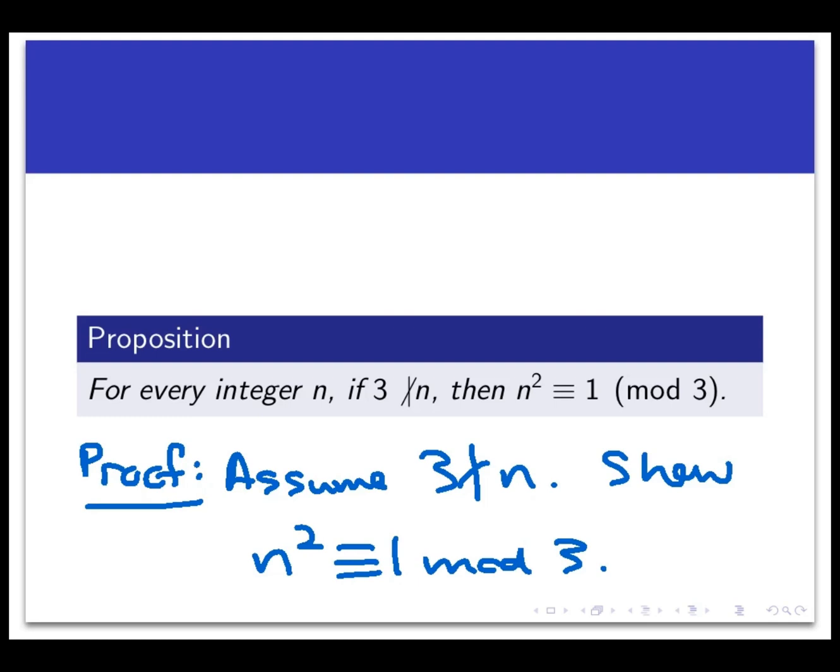Well, often in the past, we'd balk at this kind of negative statement, 3 doesn't divide n, and maybe back up and try our proof by contradiction or contraposition instead. If we tried either of those two routes instead of direct proof this time, we'd still end up needing a negative statement in the conclusion. So why don't we just stick with direct proof? So again, what do we do with the assumption? What's a forward step we can make?